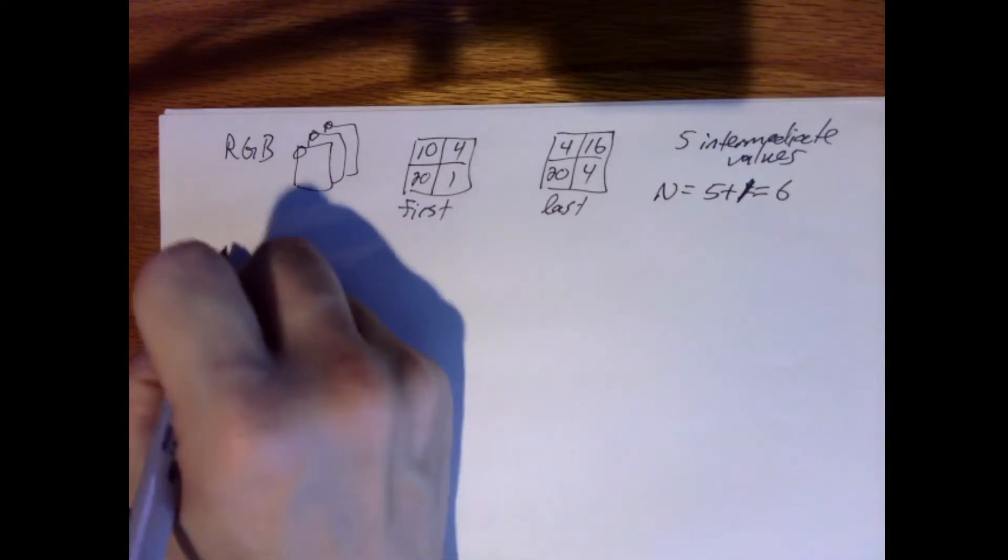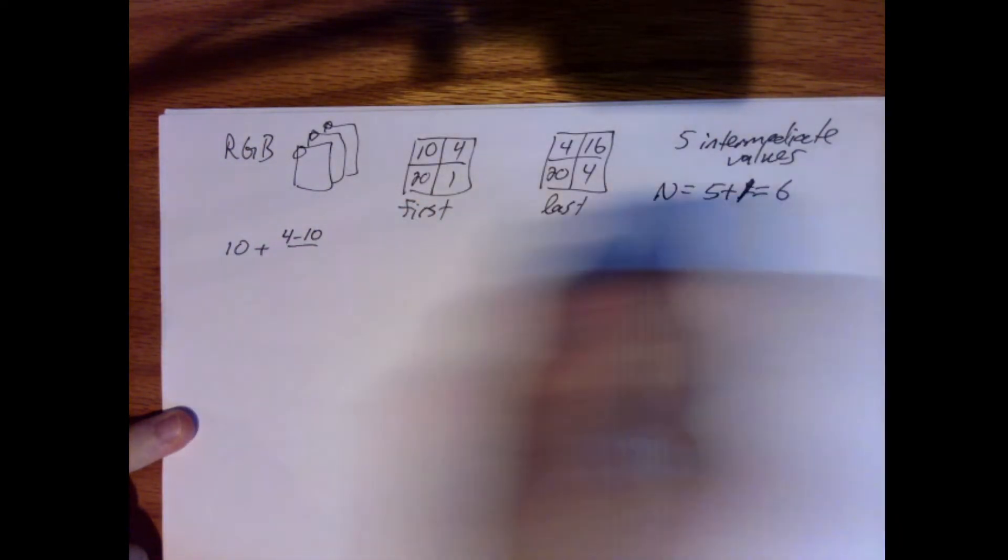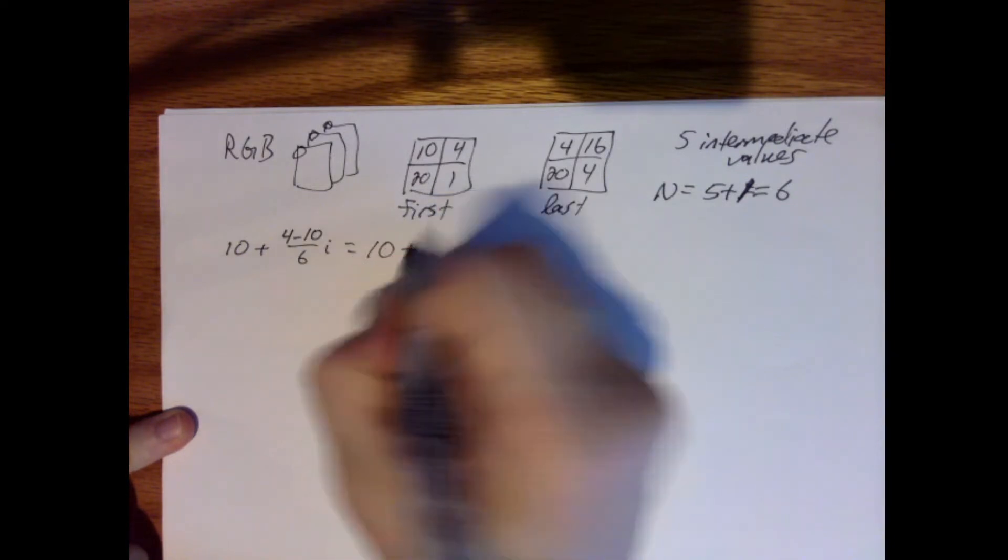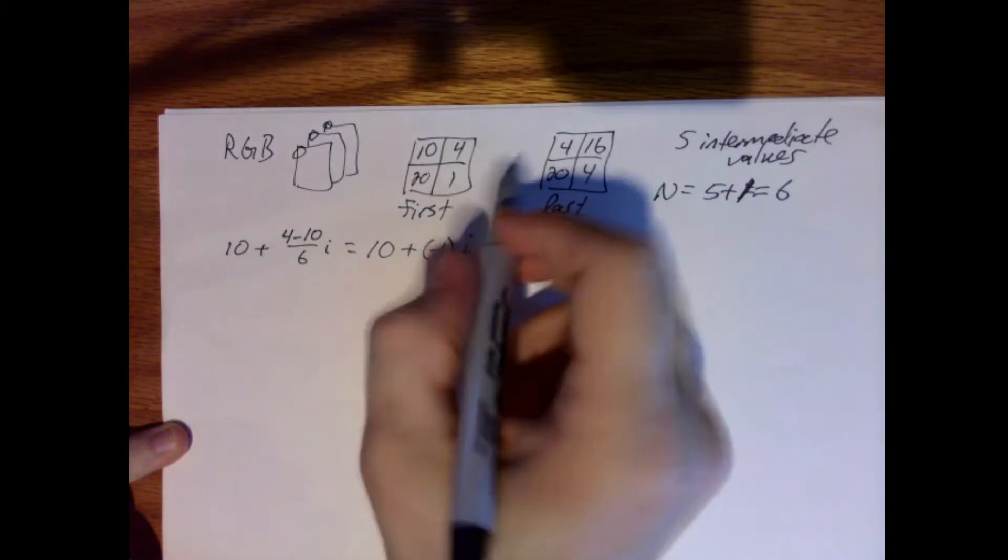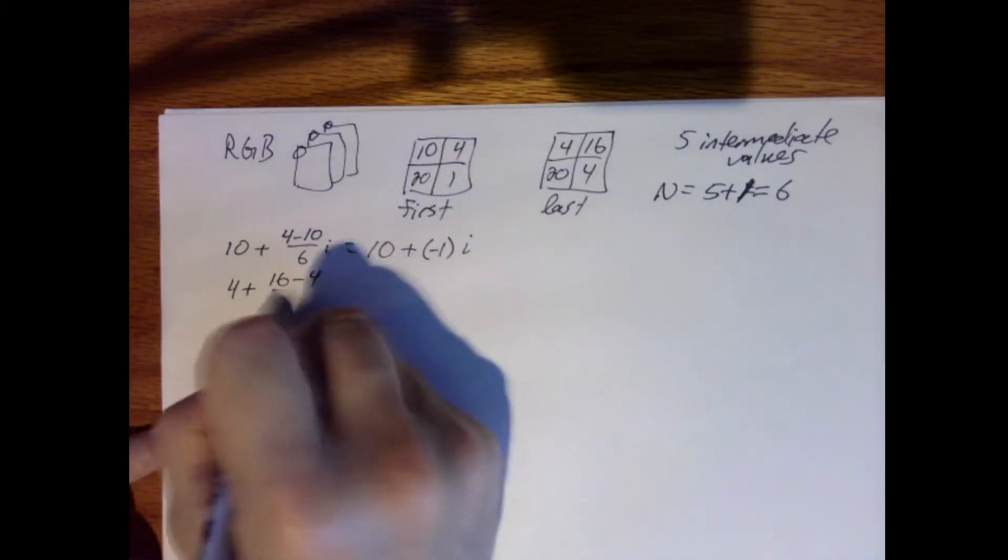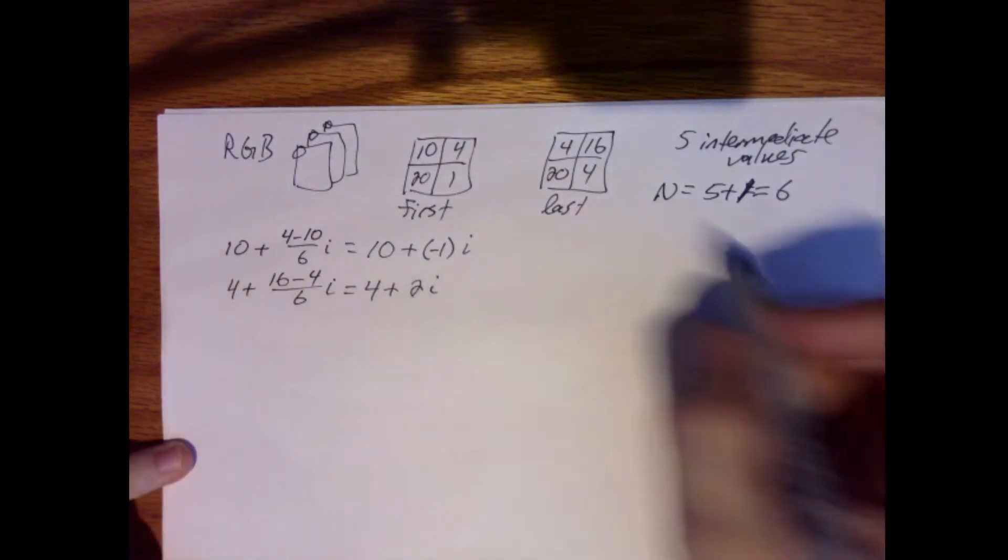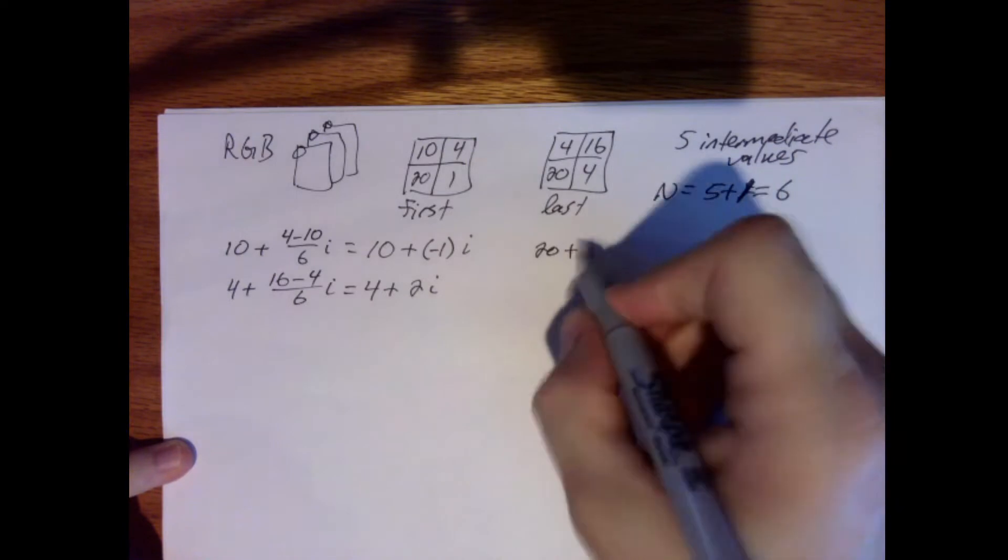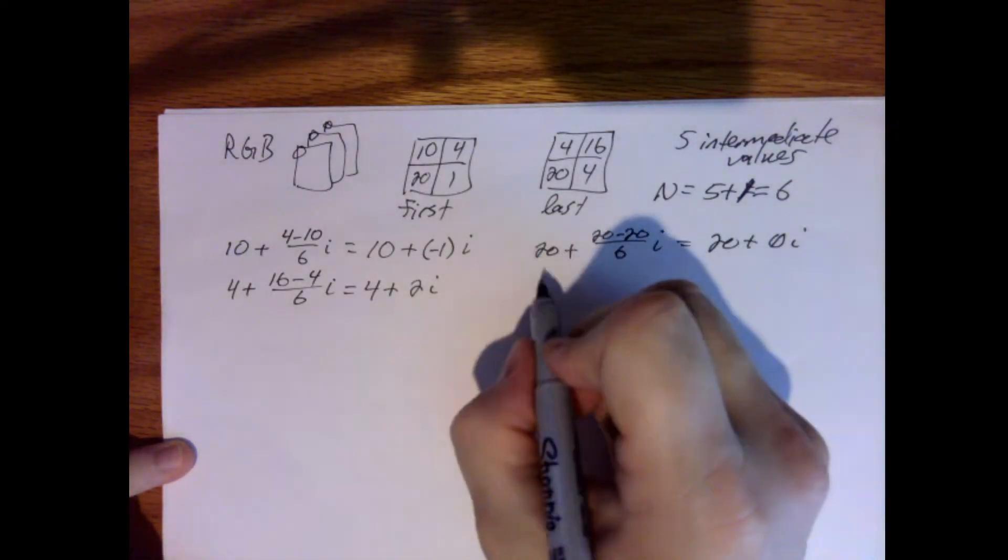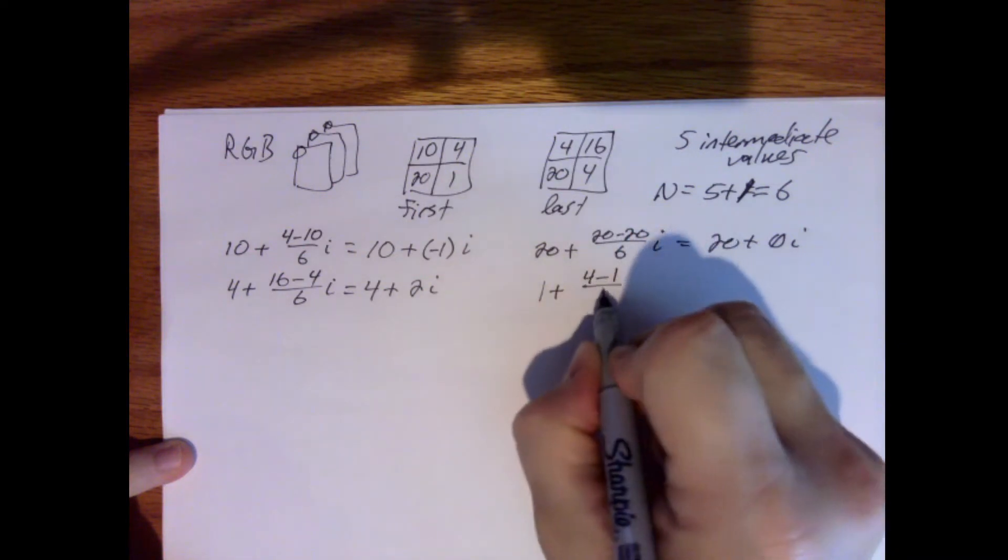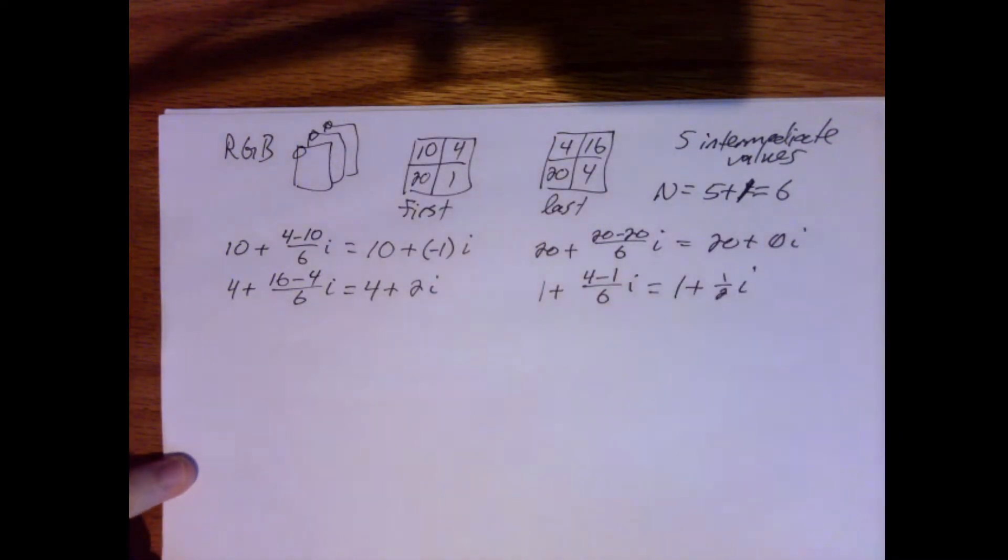So if we look at a couple of these, we'd have 10 plus 4 minus 10 over 6i. It will be 10 plus negative 6 over positive 6, which is negative 1. So it could have been 10 minus 1i. Then we'll do this one: 4 plus 16 minus 4 over 6i equals 4 plus 12/6 or 2i. Let's do a couple others here. 20 plus 20 minus 20 over 6i equals 20 plus 0i, so it won't change. And finally, 1 plus 4 minus 1 over 6i would be 1 plus 3/6 or 1/2 i.